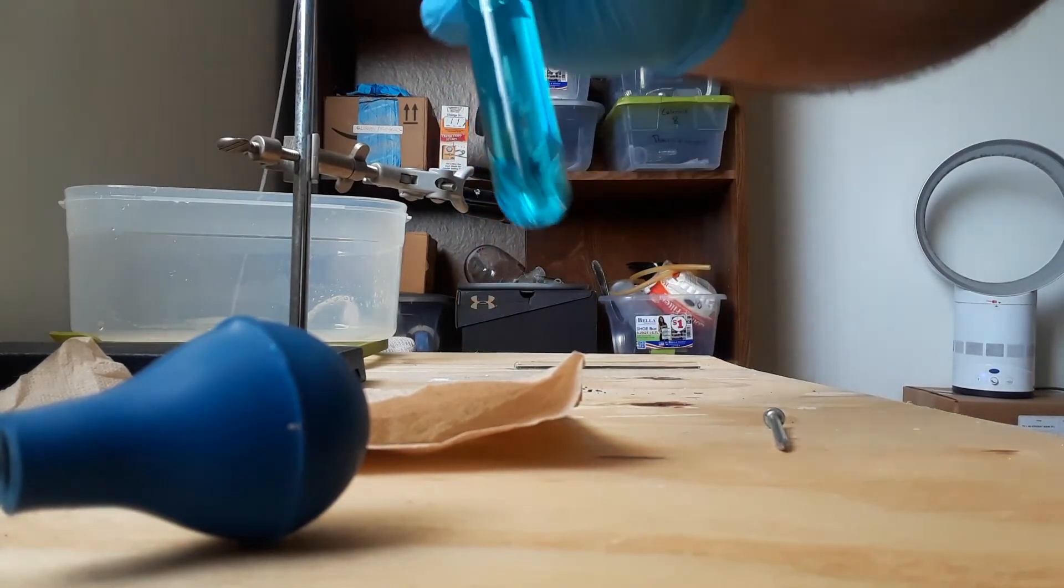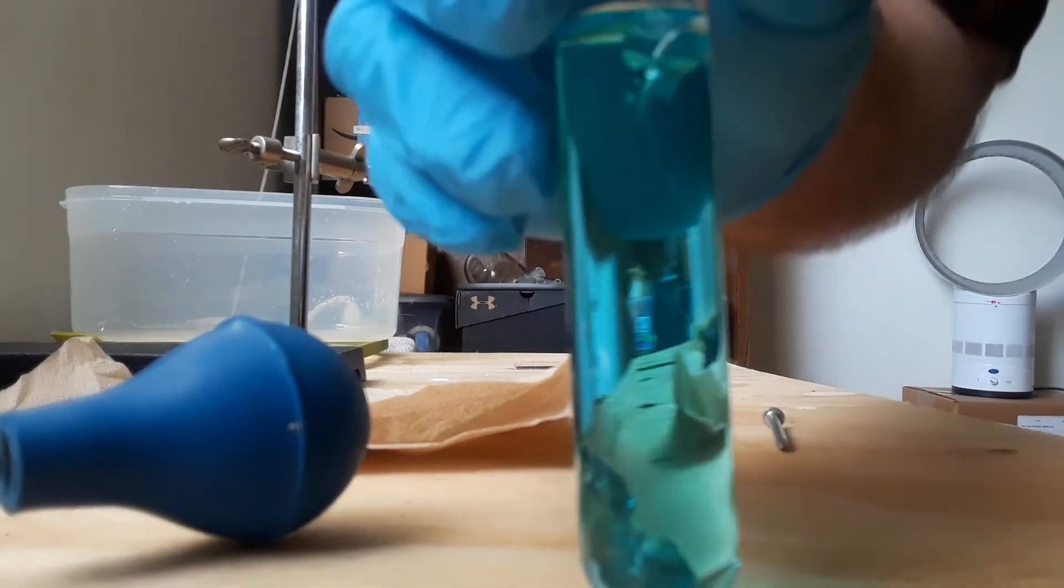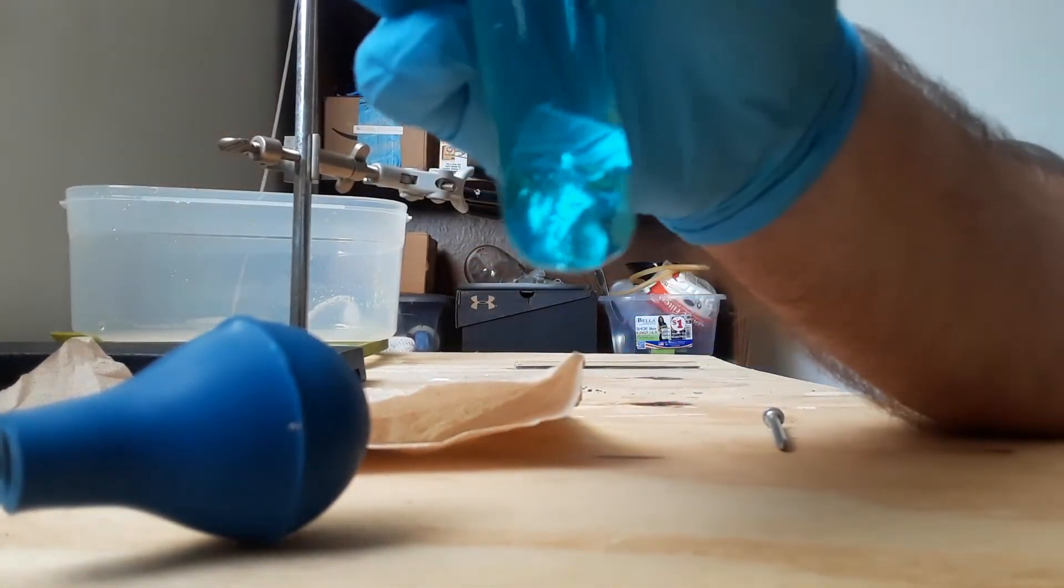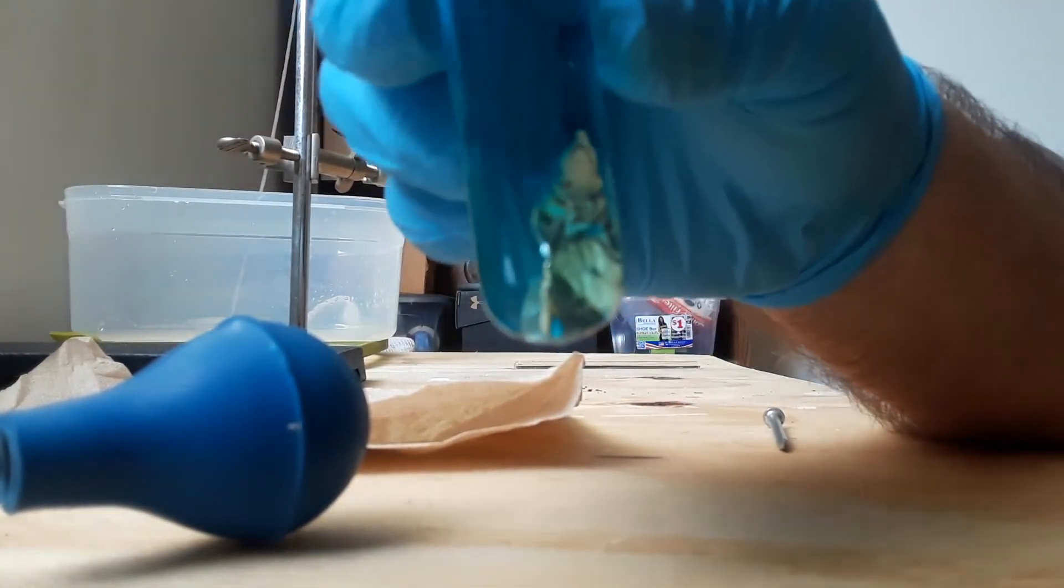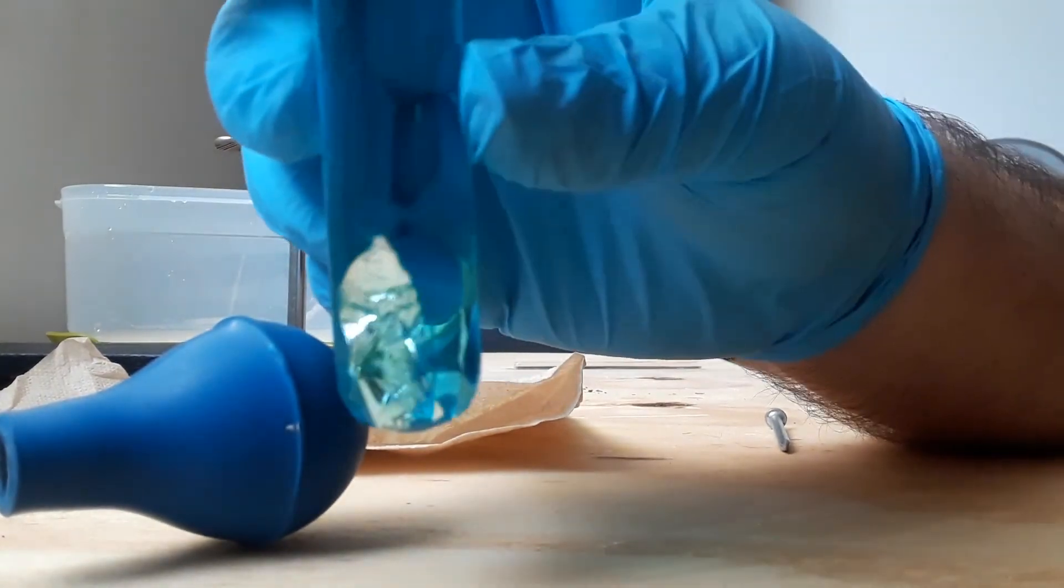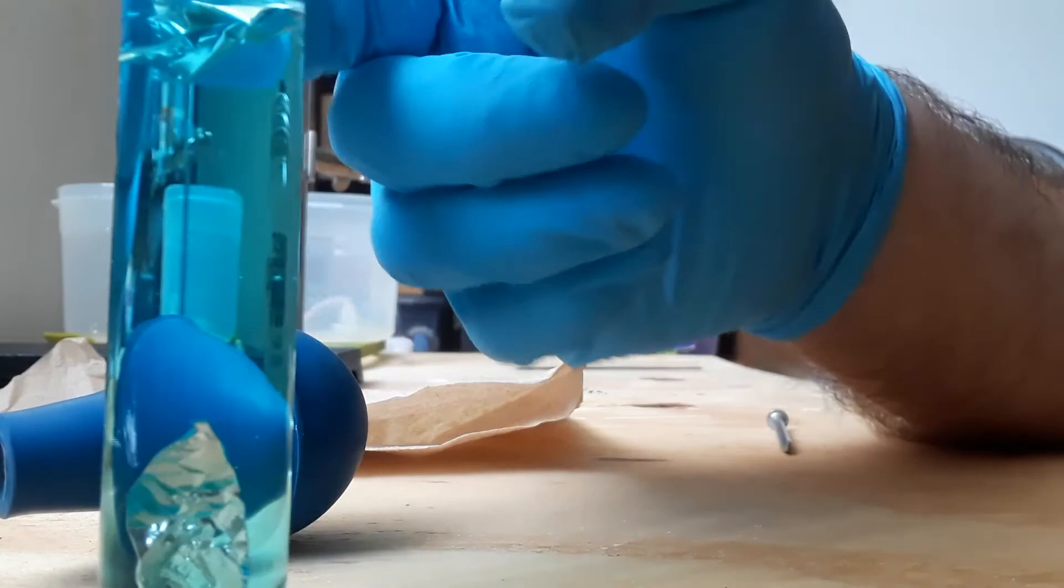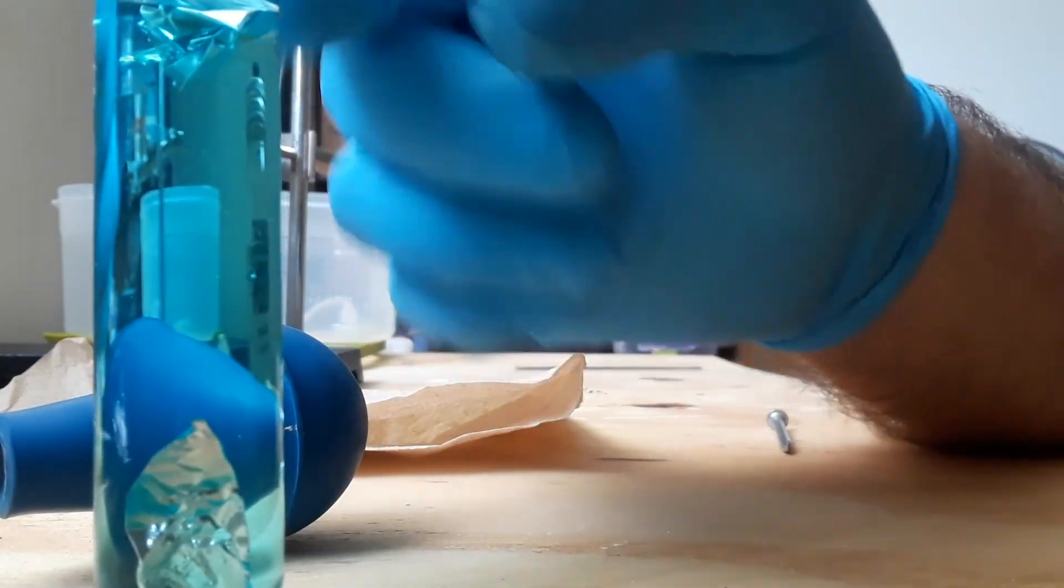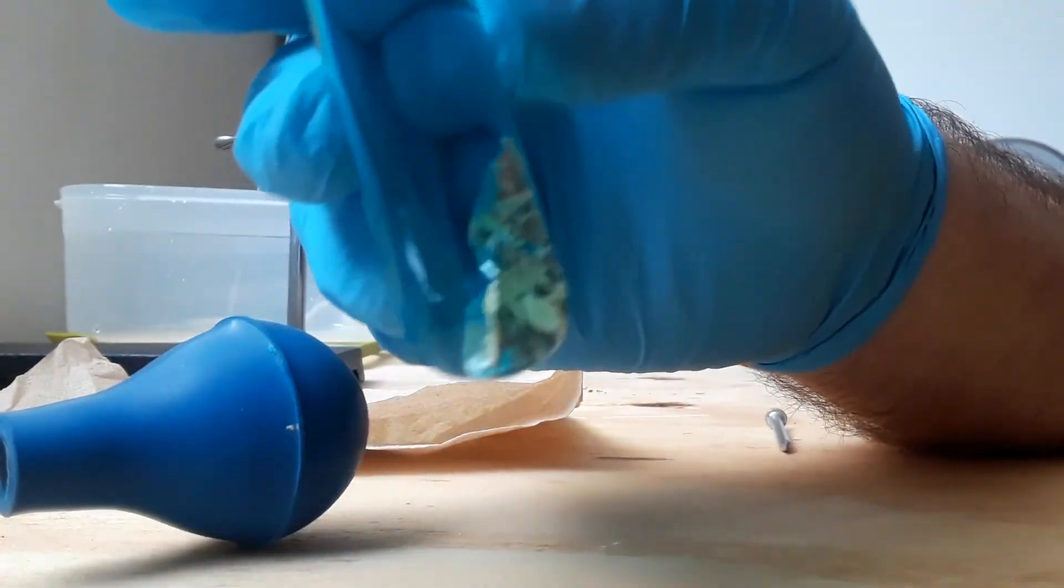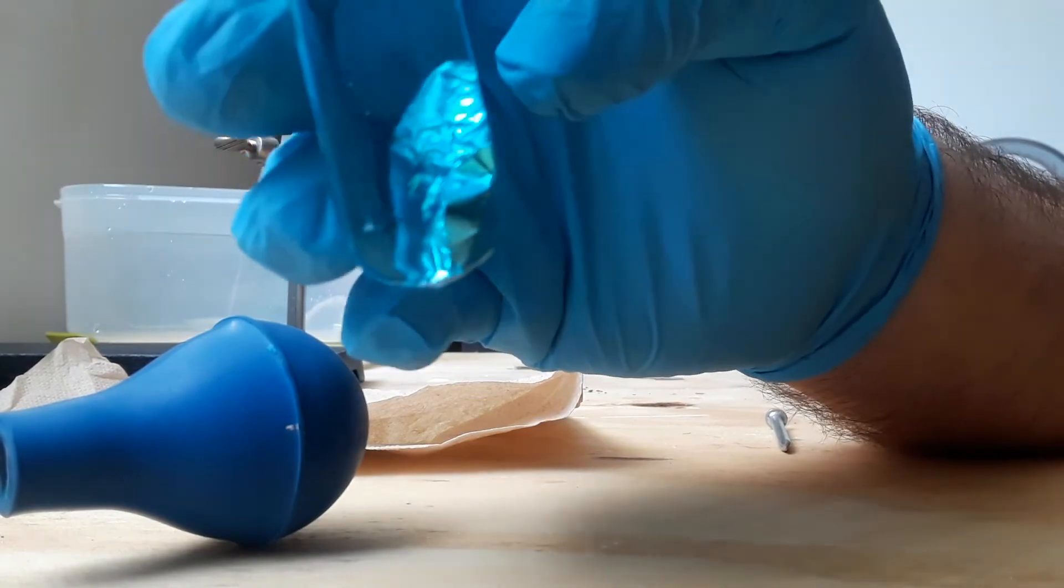That's interesting. The foil that I scratched sunk right to the bottom but the one that I didn't is floating on top, so there's a density difference. It could be I squished this one a little bit and there's an air pocket in there maybe, but I don't think so.